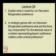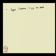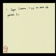Question: Explain what is meant by Von Neumann-Morgenstern preference. In Von Neumann-Morgenstern preference, we are dealing with uncertain situations. Suppose three outcomes x, y, z can occur with probabilities P1, P2, P3, where P1 + P2 + P3 = 1.